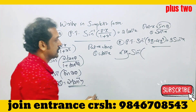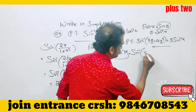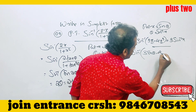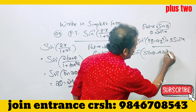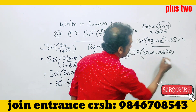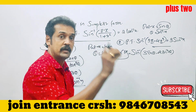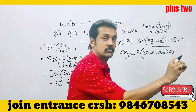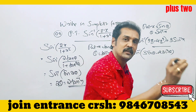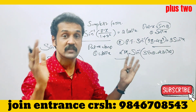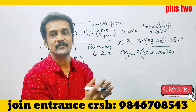The bracket contains sin θ. So we substitute: 3 sin θ minus 4 sin cubed θ. The expression 3x minus 4x cubed becomes 3 sin θ minus 4 sin cubed θ.